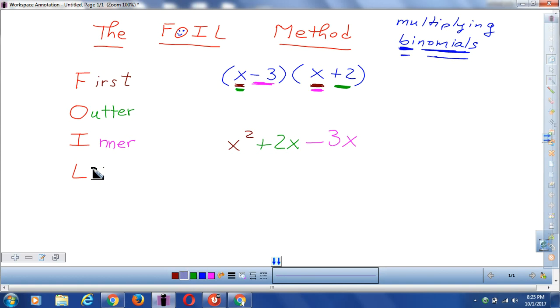And finally, we will do the last. Last is the opposite of first. So that means that this is the last piece of the first binomial, and this is the last piece of the second binomial. Negative times positive makes negative. And three times two makes six.